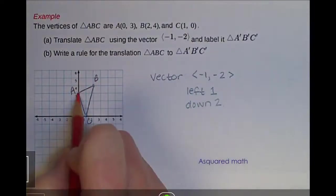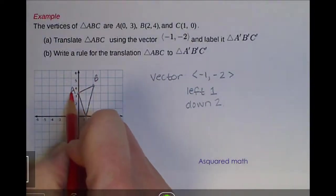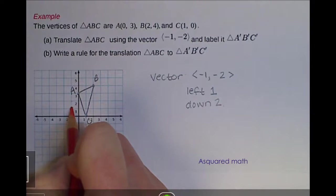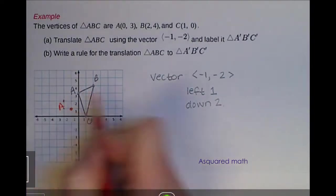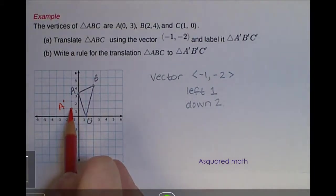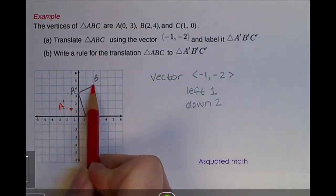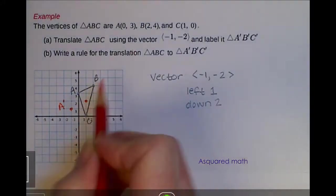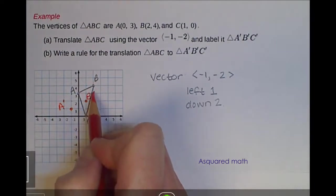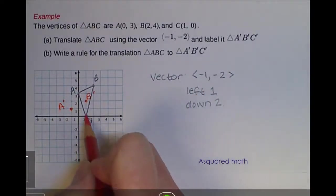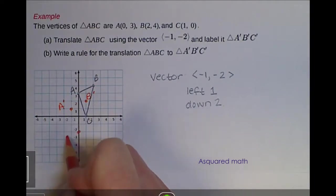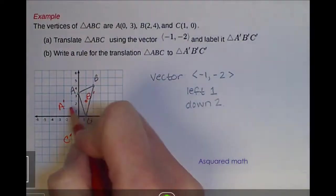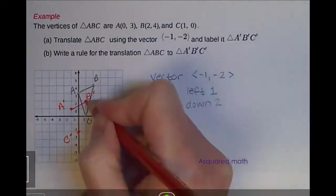So if we go and look at A, we go left 1 and down 2. A' is then at the point (-1,1). If we go up to B, and we follow the vector left 1, down 2, B' ends up at the coordinate point (1,2). And then follow the same thing for point C, we go left 1, down 2. We end up with C' at (0,-2). So connect those dots so we can form our figure.